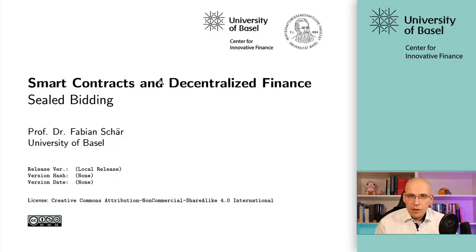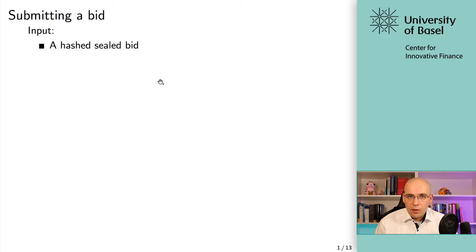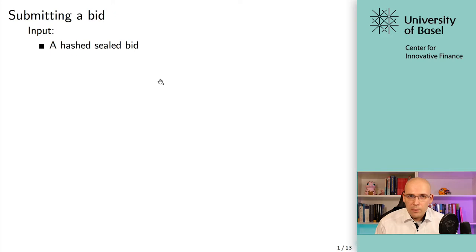The first thing we will do is create a function needed for the commit step — basically a way for people to submit their bids in a hidden form. As input to commit their bid in hidden form, we use the hashed sealed bid: the hash value that we get from all the inputs we looked at in the last video.